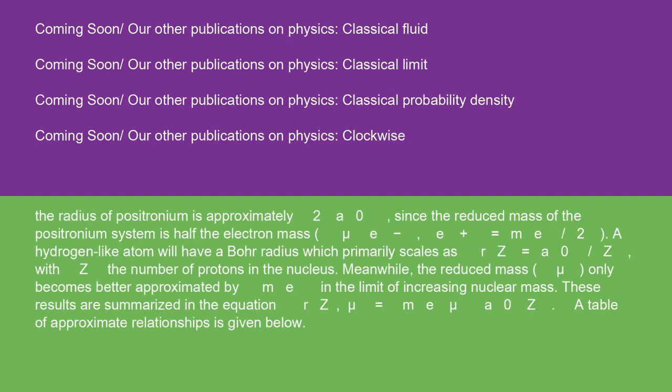For example, the radius of positronium is approximately 2a₀, since the reduced mass of the positronium system is half the electron mass: μₑ₋ₑ₊ = mₑ/2.